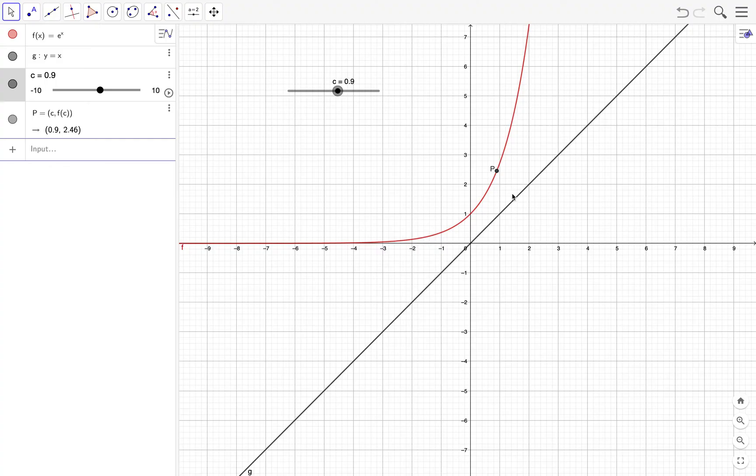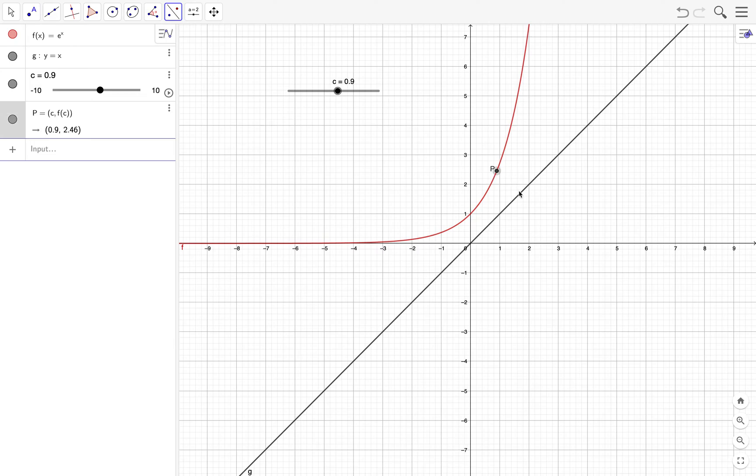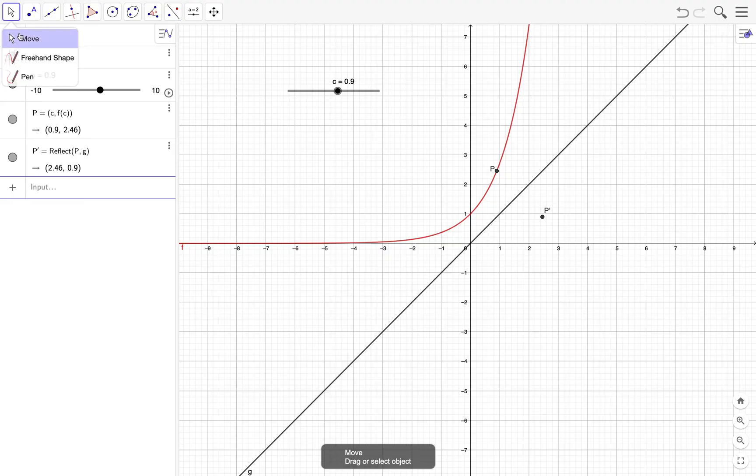Now we reflect point P about the line y equals x using the reflect about line tool. To do that, we select the reflect about line tool, click on P, and then click on the line of reflection which is y equals x. Let's see what happens if we drag c.